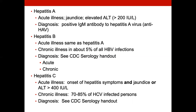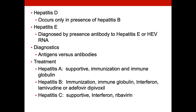Hepatitis A just needs to get out of their system — they've ingested fecal matter. You see this a lot in restaurants and daycare facilities where people don't wash their hands properly. It's a self-limiting illness unless they have a compromised immune status. Hepatitis D only occurs in the presence of hepatitis B — if we're treating a patient for chronic hepatitis B, they might find hepatitis D during evaluation by a specialist. Hepatitis E is only diagnosed by antibodies to hepatitis E or HEV RNA — typically you're not going to see this in a clinic, only in a specialist's office.